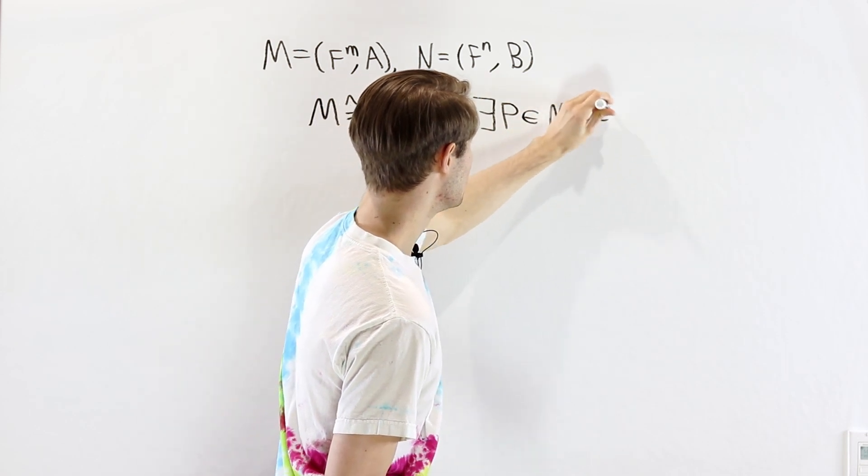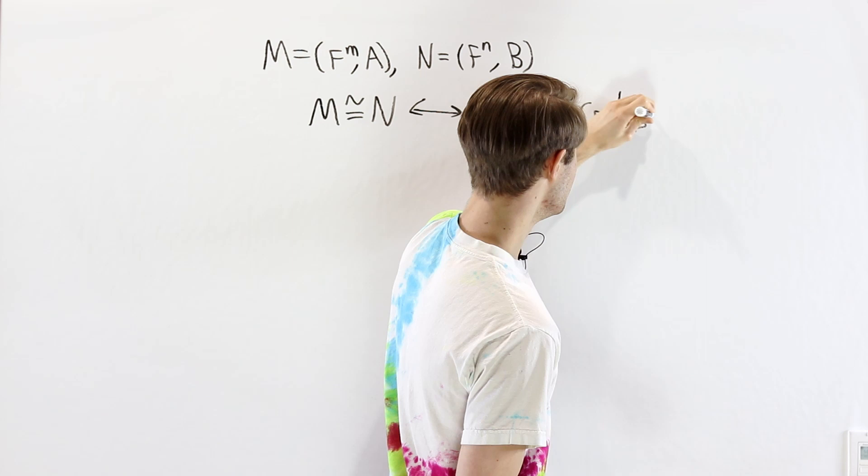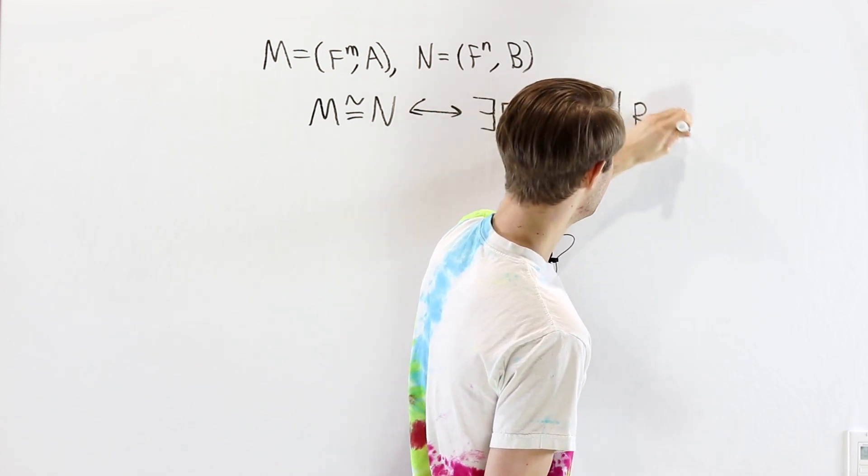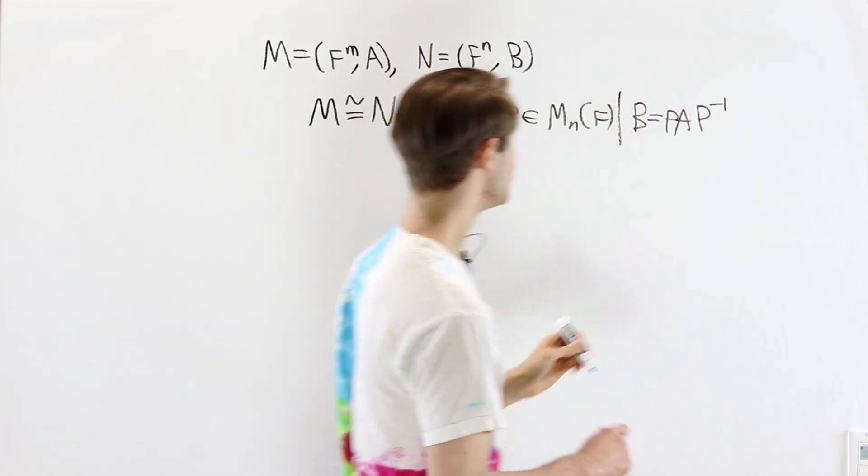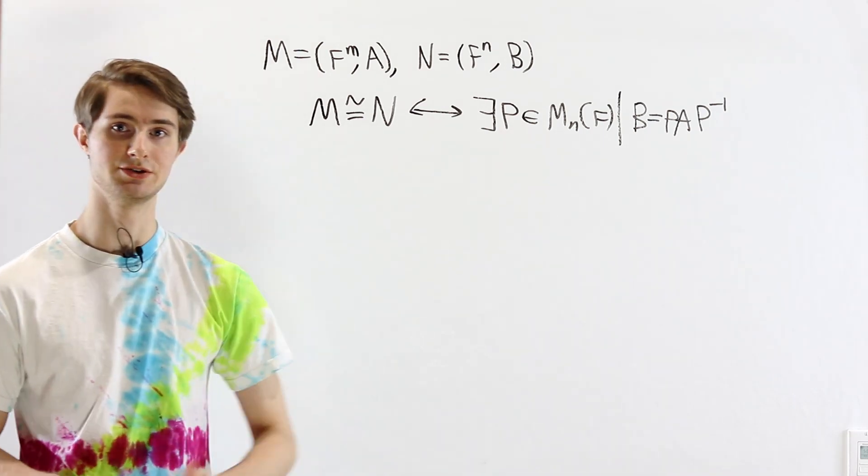An n by n matrix over F, such that B is equal to PAP inverse. This over here is exactly the condition for A and B to be similar matrices.